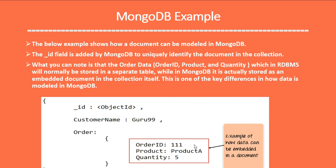Looking at the order data here, in RDBMS this data would normally be stored in a separate table, while in MongoDB it is actually stored as an embedded document in the collection itself. This is one of the key differences in how data is modeled in MongoDB, and we'll see many more examples of this in further topics.